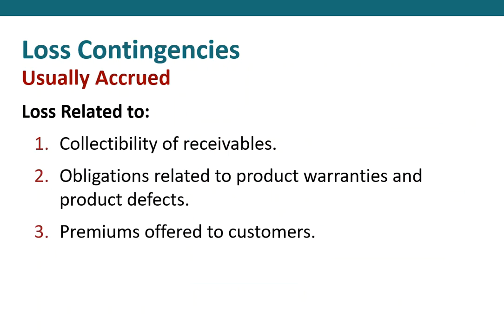Loss contingencies we typically accrue include: the collectability of receivables — we won't collect all the money from customers, so we record bad debt expense and an allowance for doubtful accounts. Obligations related to product warranties and defects — if we have experience and can put a number on it, we accrue that warranty obligation in the current period; otherwise we disclose it in the footnotes. Premiums offered to customers — rebates or incentives we expect customers to exercise — are also typically accrued.